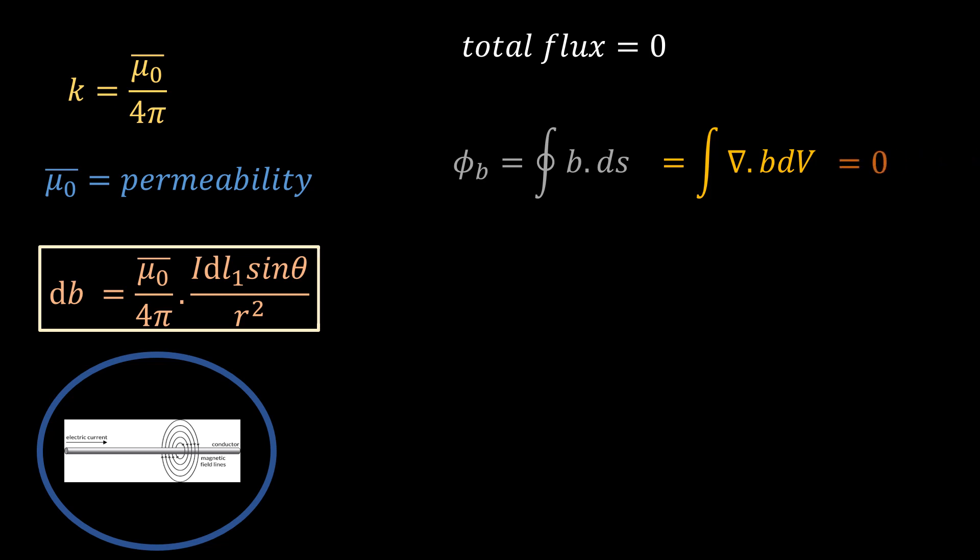Therefore, ∇·b = 0. This is the second Maxwell's equation for gravitation.